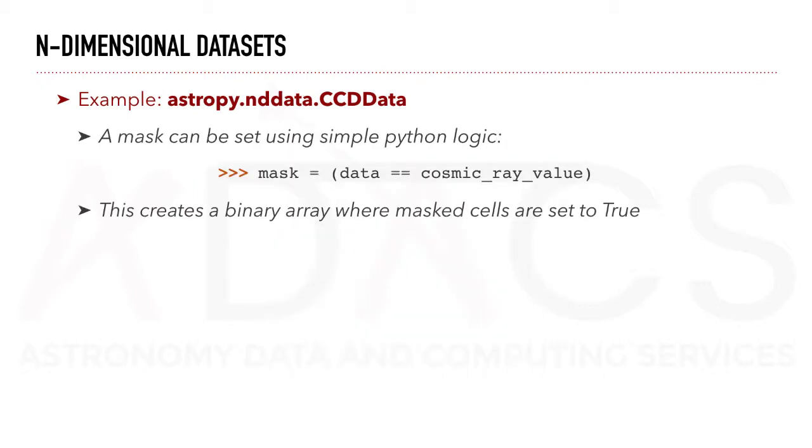A mask can be set using simple Python logic. For instance here, we will get an array mapping all the values within the data that correspond to the cosmic ray value.